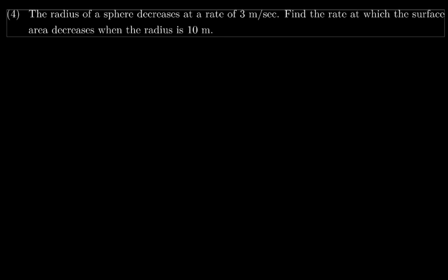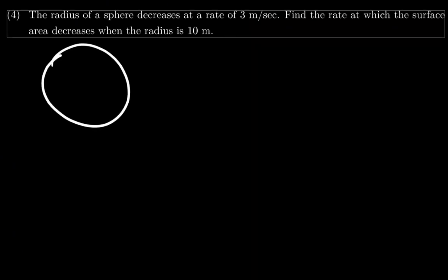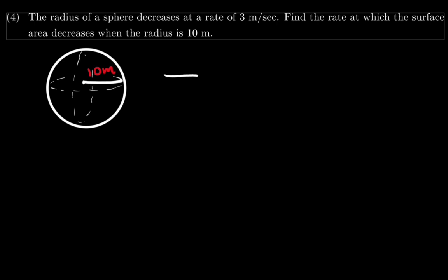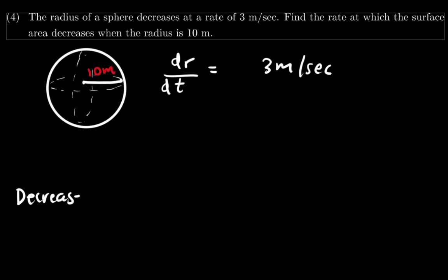Question number 4: the radius of a sphere decreases at a rate of 3 meters per second. Find the rate at which the surface area decreases when the radius is 10 meters. We have a sphere with a radius of 10 meters. The rate at which the radius decreases is 3 meters per second. Since it decreases, we take the rate as negative. When it increases we take it as positive, so here dr over dt equals negative 3.